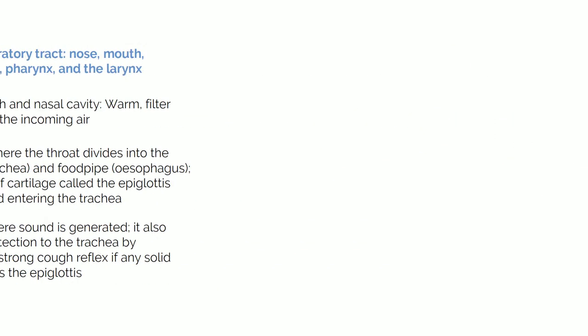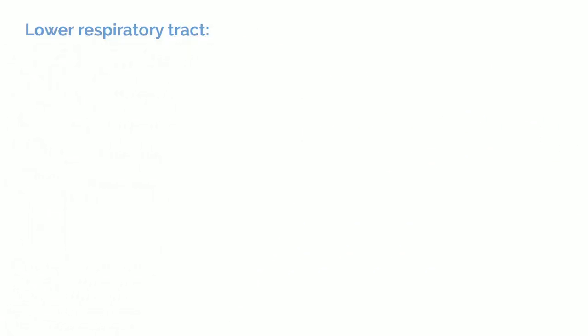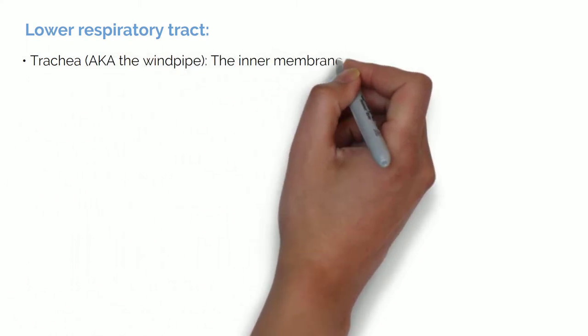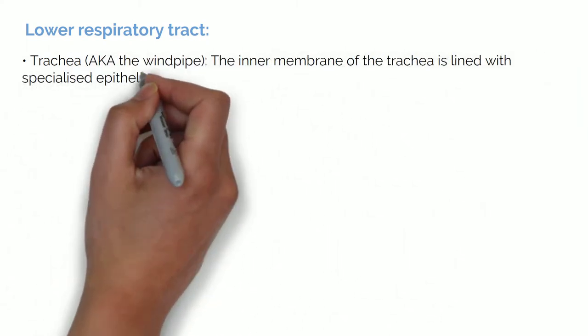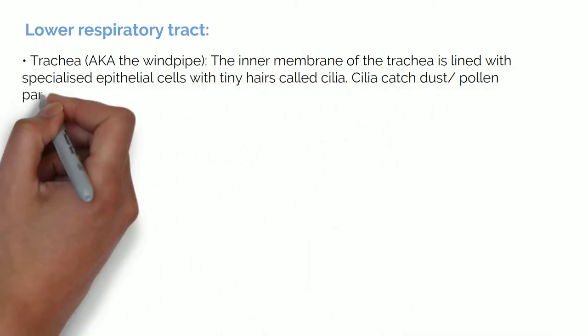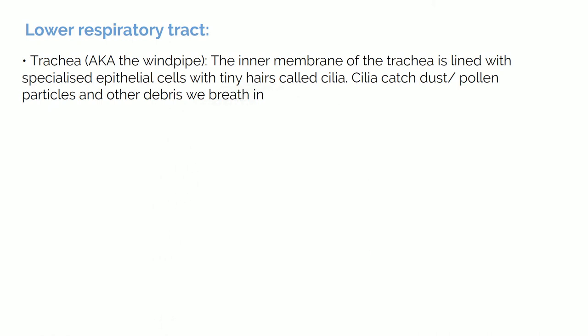The lower respiratory tract consists of the trachea, also known as the wind pipe. The inner membrane of the trachea is lined with specialist epithelial cells with tiny hairs called cilia. Cilia catch dust and pollen particles and other debris we breathe in. These tiny hairs move together to sweep the debris up the windpipe to be swallowed.